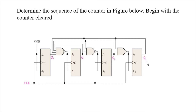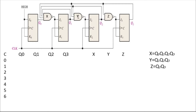You can see X, Y, and Z are the names I've given to the three NAND gates. There are four JK flip-flops: JK flip-flop number zero, number one, number two, and number three. Since initially the counter is cleared, remember these starting conditions.